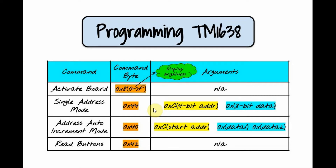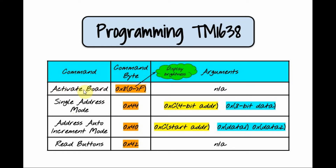The TM1638 can be programmed with 4 commands: Activate Board, Single Address Mode, Address Auto Increment Mode, and Read Buttons Mode. The first command to send is the Activate Board command, which has a hex value of 8 followed by a second digit between 0 and F. The second digit determines the brightness of the display.